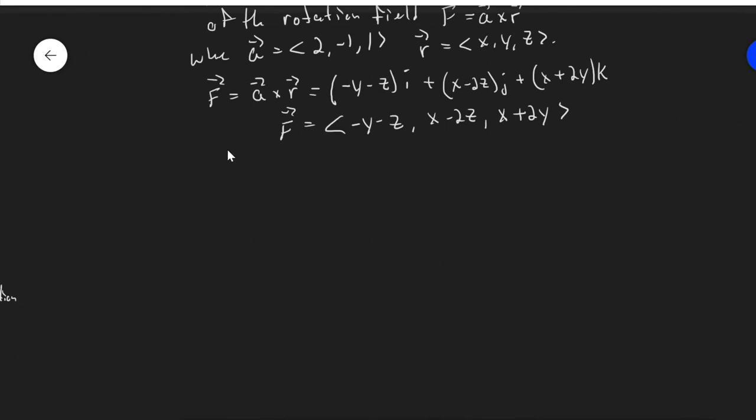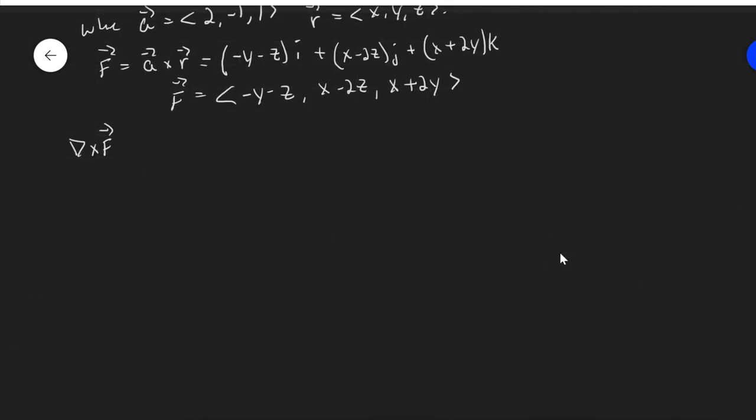So now I'm going to take the del operator and cross it with my vector field f. So this is...we'll actually compute this one out because we don't just have a general formula...i, j, k. Partial with respect to x, partial with respect to y, partial with respect to z. And lastly, the components of my vector field...minus y minus z, x minus 2z, and x plus 2y. And we'll compute the determinant of this, of course, remembering that we're not actually taking products rather, but applying the operator where we would normally take a product.